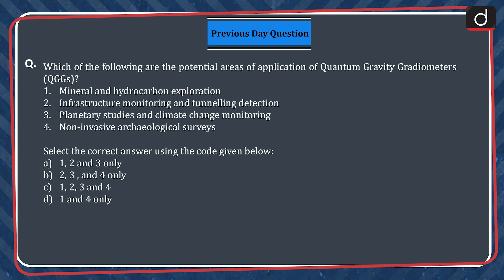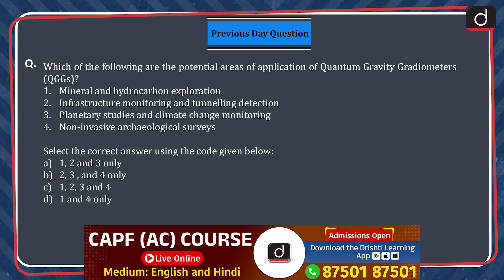Select the correct answer using the code given below. A. 1, 2 and 3 only. B. 2, 3 and 4 only. C. 1, 2, 3 and 4. D. 1 and 4 only.